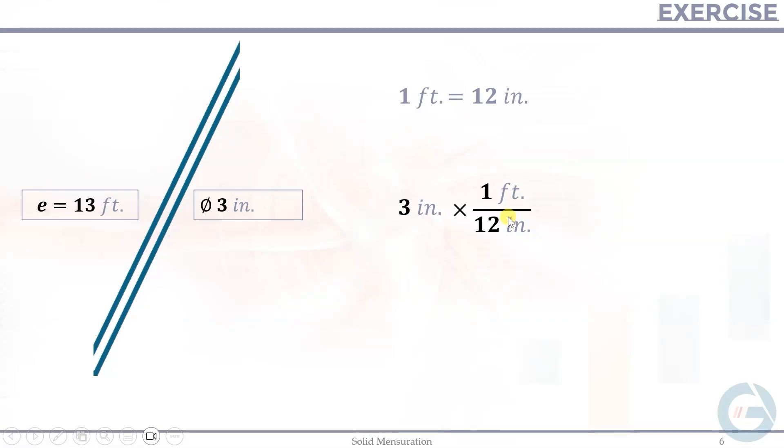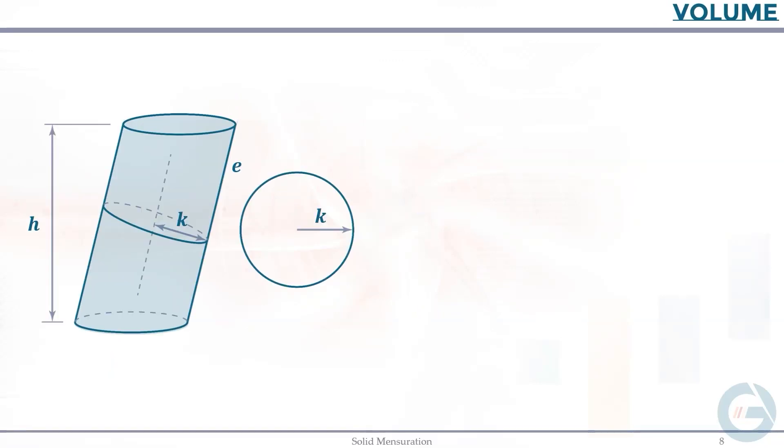So the denominator is inches. This one is inches. So make sure to check that always. So this cancels out, which gives us that 3 inches is equivalent to 1 fourth foot. So this diameter now in terms of foot is 1 fourth. So we can proceed with the volume of this cylinder given this equation. So area of base times side. And of course, the base is circular.